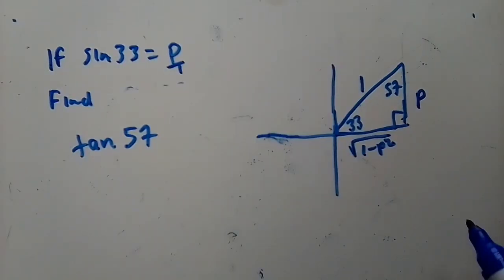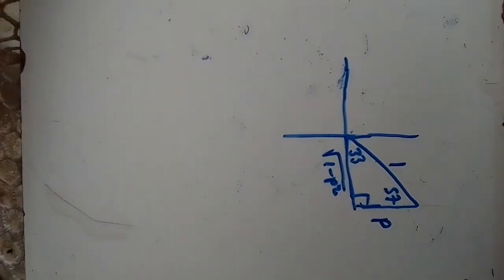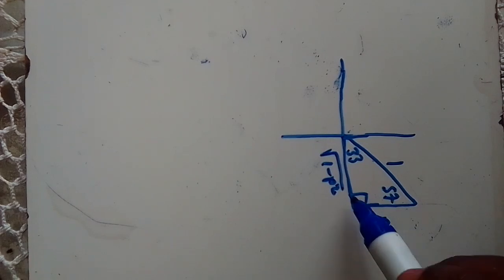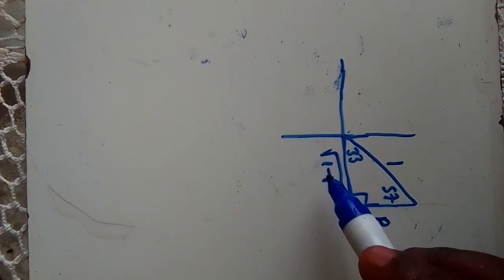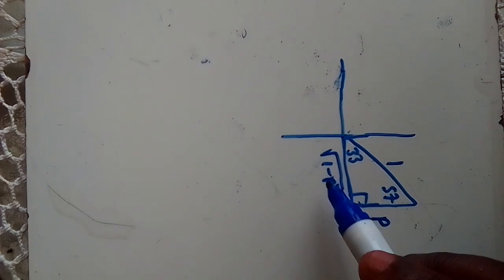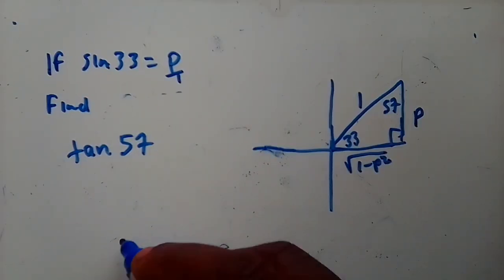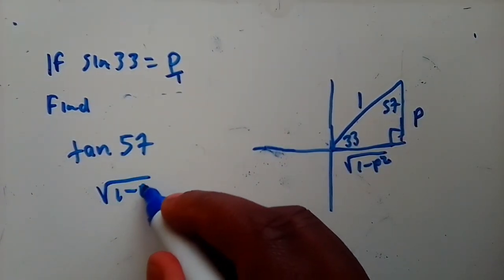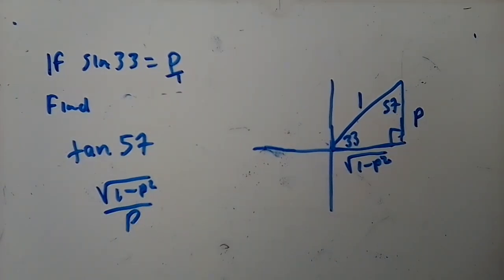When dealing with tan 57°, flip the paper so that p becomes the adjacent and √(1 - p²) becomes the opposite. Tan is opposite over adjacent, so tan 57° = √(1 - p²) / p.